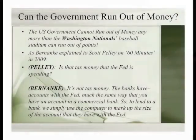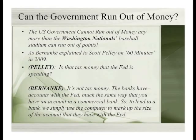What happens when the government spends? This is Ben Bernanke in an interview on 60 Minutes, when Pelley asked him: 'Is that tax money the Fed is spending?' Bernanke says: 'It's not tax money. The banks have accounts at the Fed, much the way you have an account at a commercial bank. So when we want to lend to a bank, we simply use the computer to mark up the size of the account they have with the Fed. It's exactly like putting points on the screen at a baseball game. They just mark up the balance.'